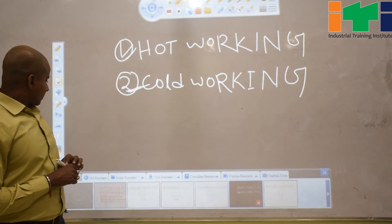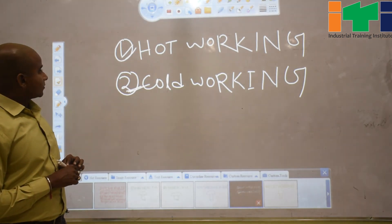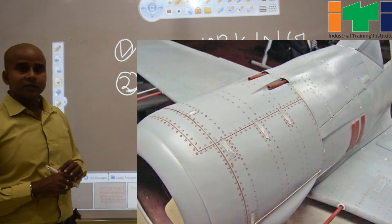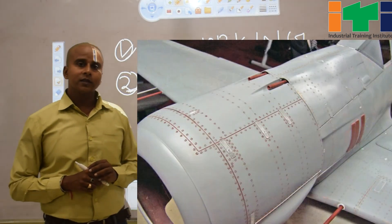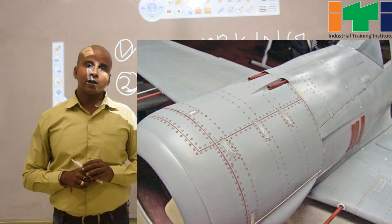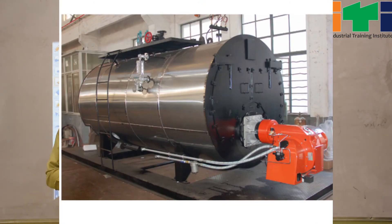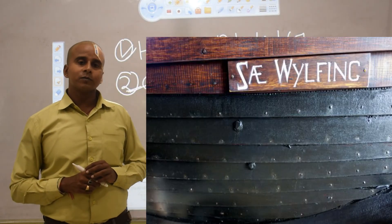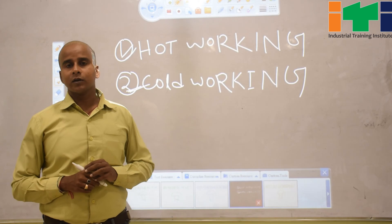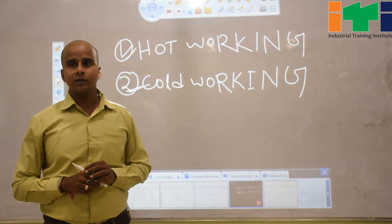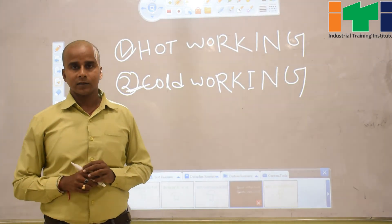Generally, the riveting process is used in aircraft, boilers, sheaths, and any sheet metal work or fabrication work.